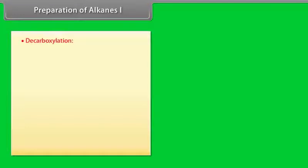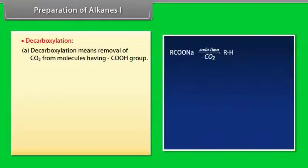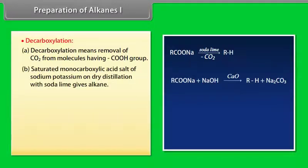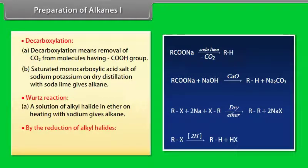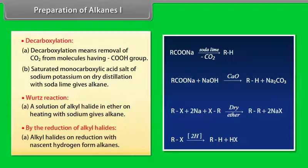Preparation of alkanes part 1: Decarboxylation means removal of CO2 from molecules having COOH group. Saturated monocarboxylic acid salt of sodium or potassium on dry distillation with soda lime gives alkane. Wurtz reaction: A solution of alkyl halide in ether on heating with sodium gives alkane. By reduction of alkyl halides: Alkyl halides on reduction with nascent hydrogen form alkanes.